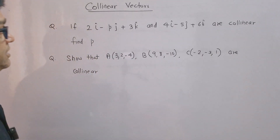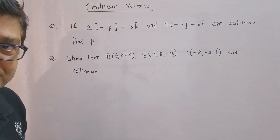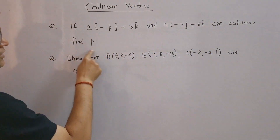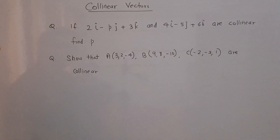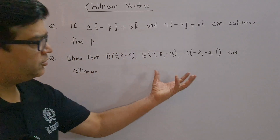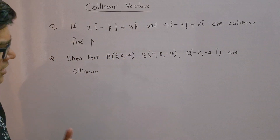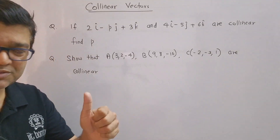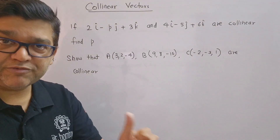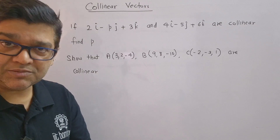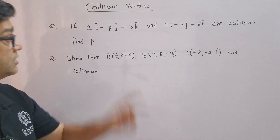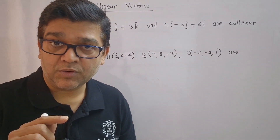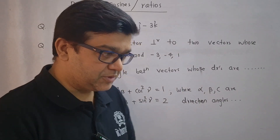The next category of important questions for vectors is based on the concept of collinear vectors. The question may be: given two vectors, find the unknown p, or they may give you three points and ask you to show that these three points are collinear. So the first most important topic was volume of parallel piped and the second most important topic in vectors is collinear vectors.